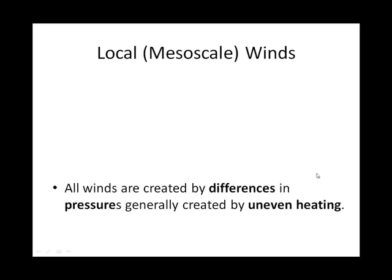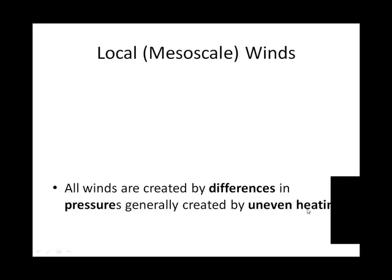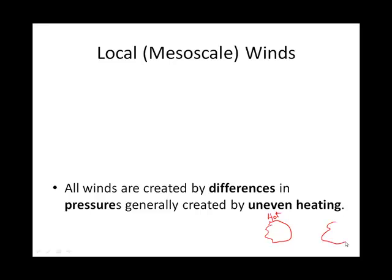Let's look a little closer at mesoscale winds. In each of these cases we're going to see that they are created because wind wants to go from a high to a low pressure. Specifically, these medium scale winds have to do with uneven heating. If we have a chunk of air that's hot or warm and a chunk of air that's cold or cool, this creates a horizontal difference in pressures — the hot one will generally be a low pressure and the cold one will be a high pressure.